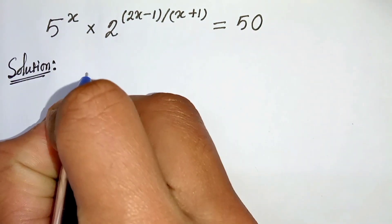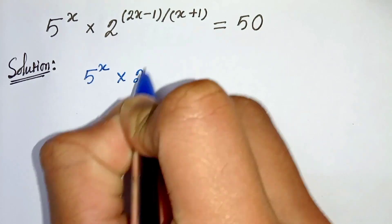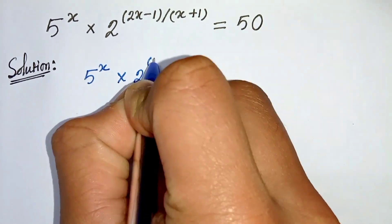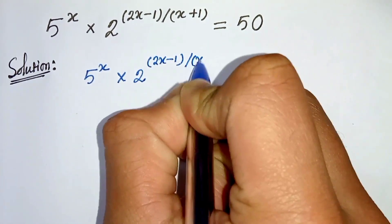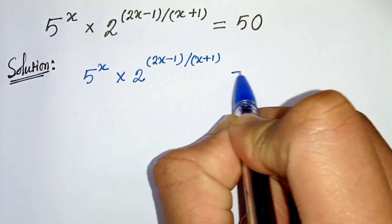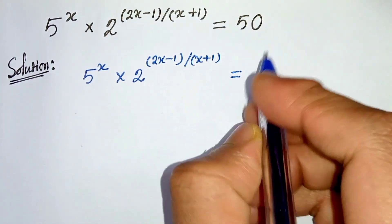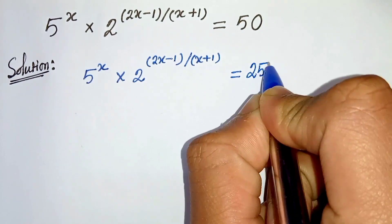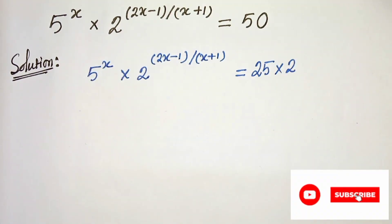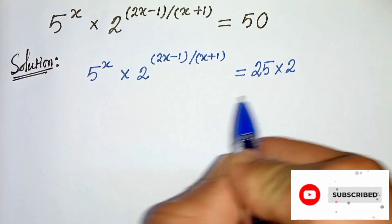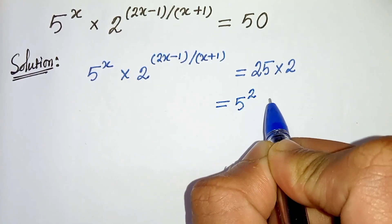So we have 5 to the power x times 2 to the power (2x minus 1) divided by (x plus 1) equals to 50. Let's break 50 and write it as 25 times 2, and again we can write 25 as 5 squared times 2.